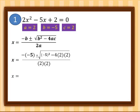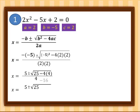Simplifying: negative times negative gives positive 5, plus or minus. The square root of (−5)² = 25, minus 4 times 4 = 16, so we have √(25 − 16) divided by 4.